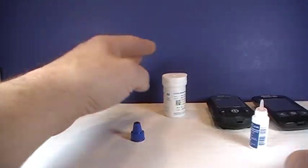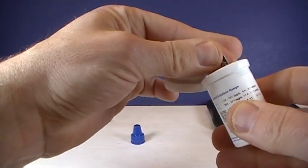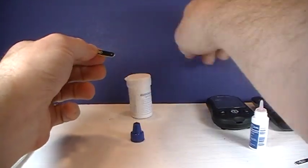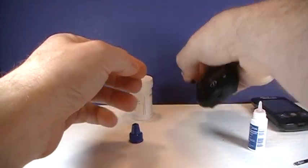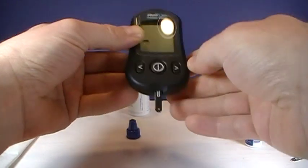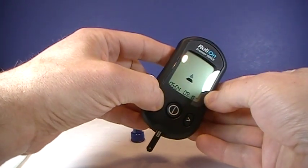The third meter, the RelyOn Voice, it's the same thing except you hold down the button on the left hand side instead of the right to notate that you're doing a control solution test. So again we put the strip in. This is the premier voice blood glucose test, please apply blood onto the test strip.